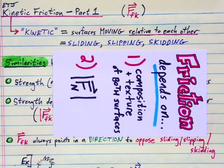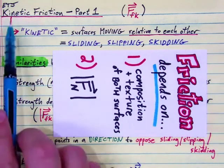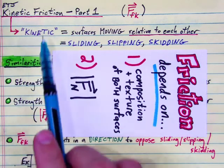What happens after static friction breaks? When an object starts to slide, slip, or skid along a surface, there's still friction, but we call it kinetic friction and it behaves a little differently.